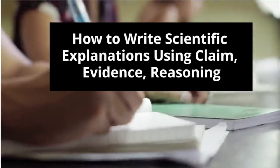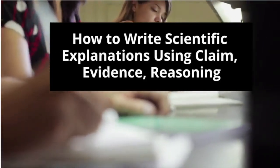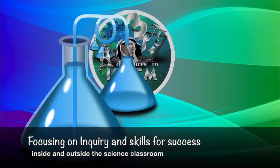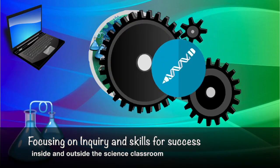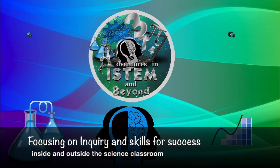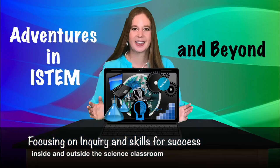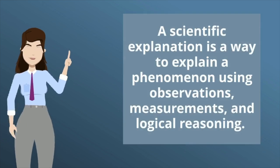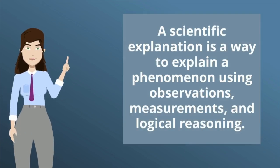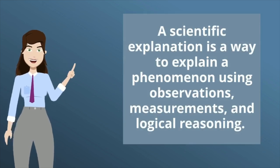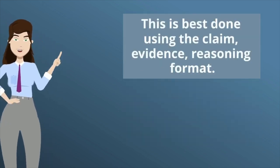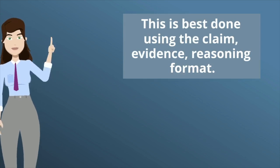How to Write Scientific Explanations Using Claim, Evidence, and Reasoning. A scientific explanation is a way to explain a phenomenon using observations, measurements, and logical reasoning. This is best done using the Claim, Evidence, Reasoning format.